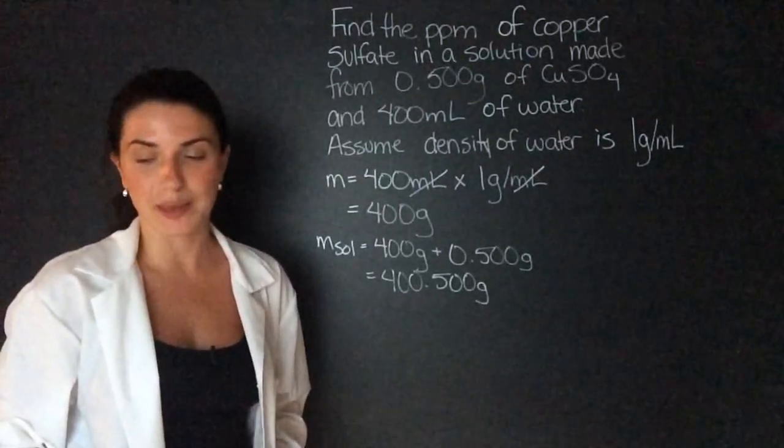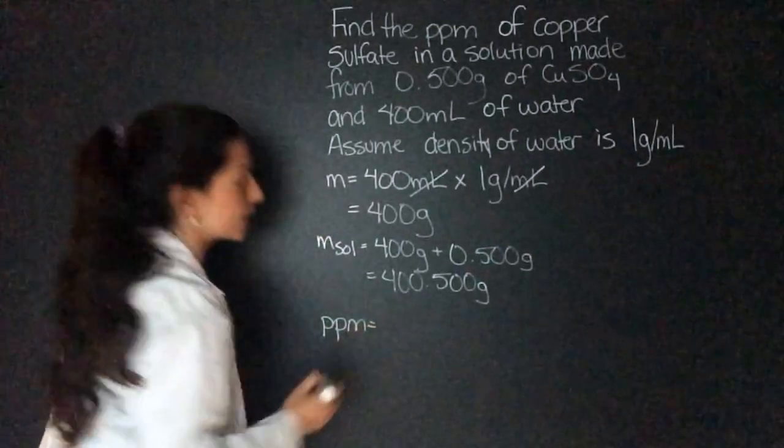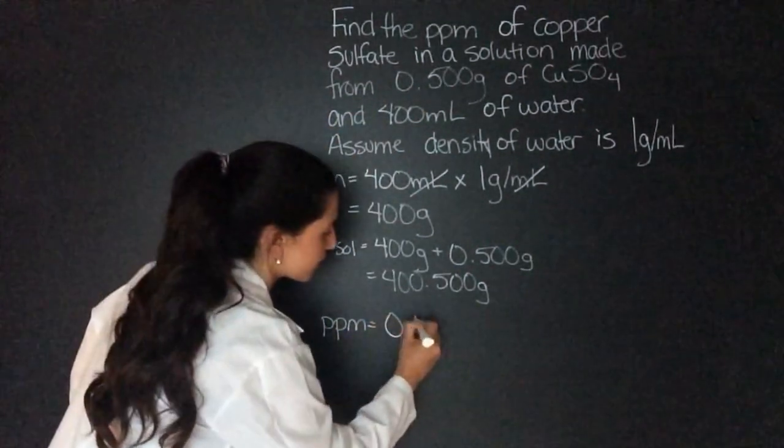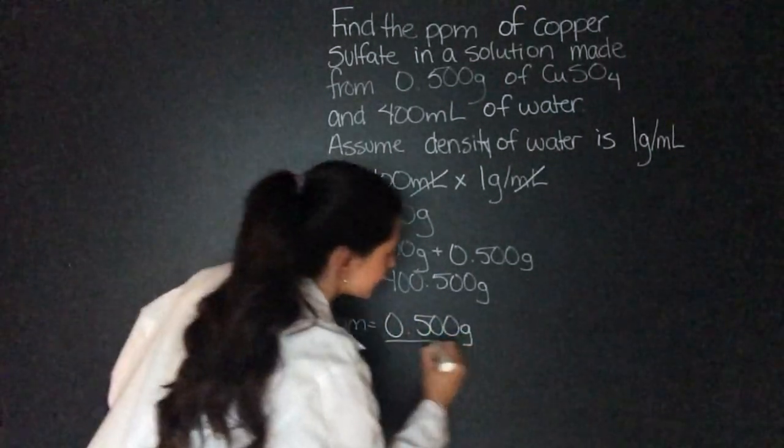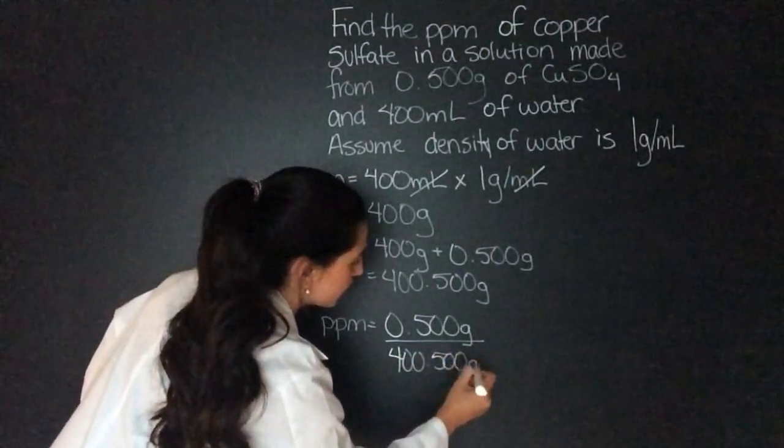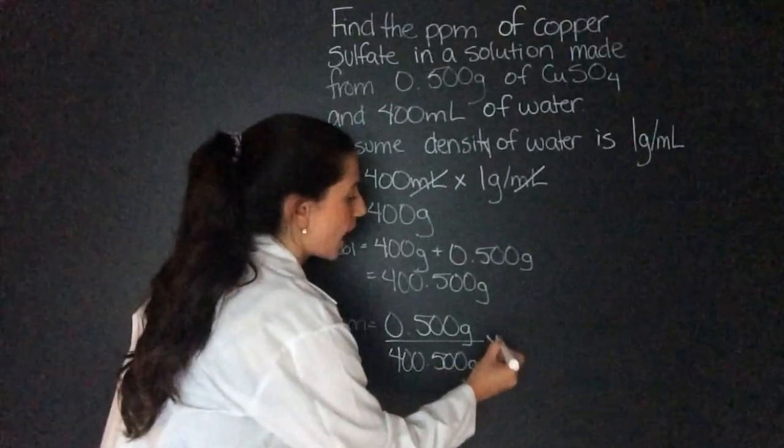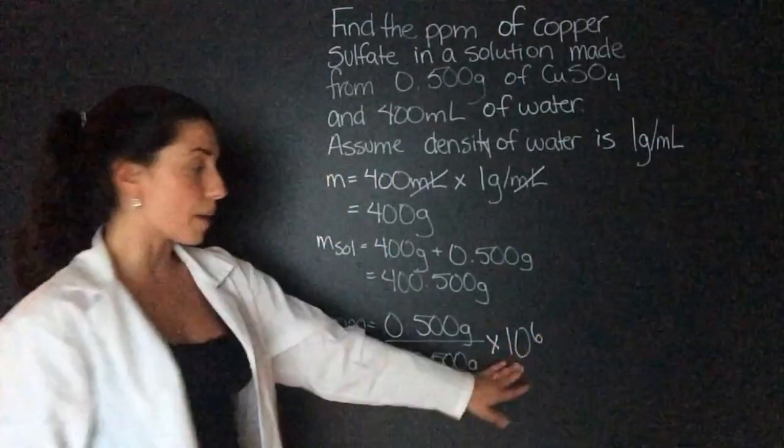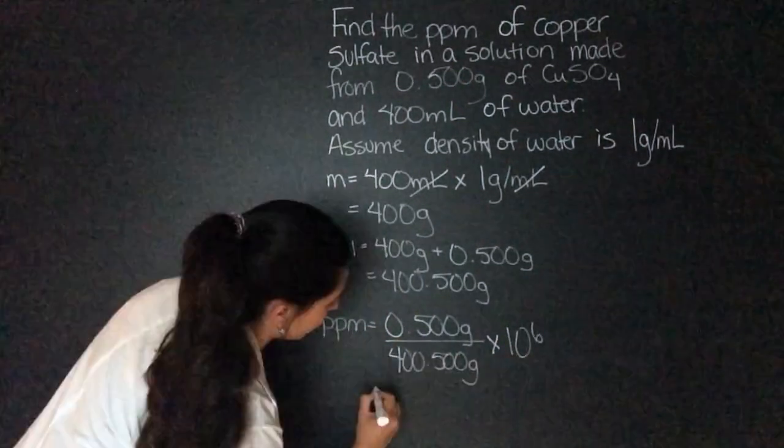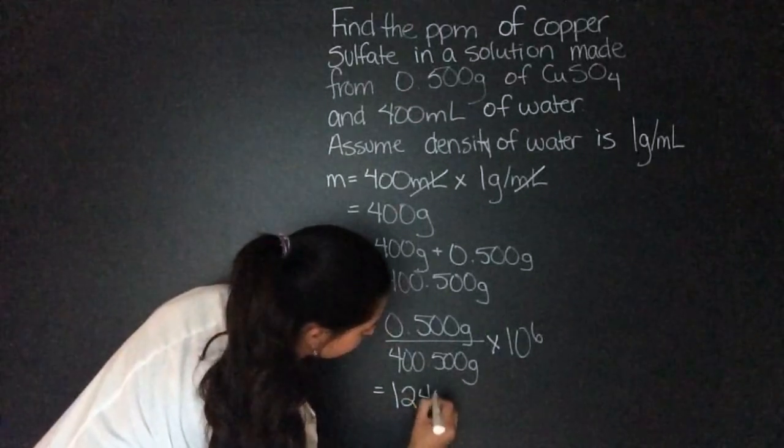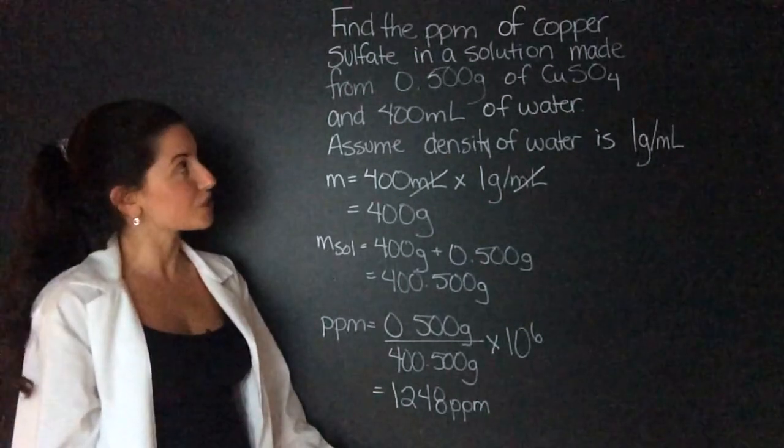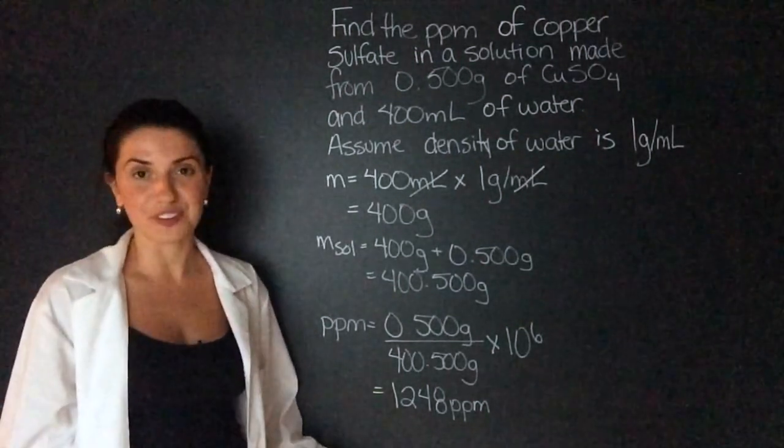Now I can do the parts per million. The parts per million is going to be the mass of the solute, which is copper sulfate, 0.500 grams, divided by 400.500 grams, that's the mass of the solution, times 10 to the power of 6. Remember if it was parts per billion I would have to multiply it by 10 to the power of 9. That equals 1248 parts per million. And that is a way of showing the concentration of the copper sulfate in the solution.